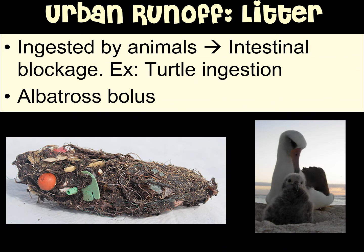Lastly we have urban runoff, which is really composed of a whole bunch of different pollutants. A good example is litter, which usually comes from urban areas and runs off with the water into larger waterways. It tends to be ingested by animals and has the tendency to break up into little pieces, making it easier for animals to ingest — we have seen this numerous times with turtles. Albatrosses have also been found to ingest a lot of plastics; they regurgitate indigestible food into boluses, and scientists found tons of plastic pieces inside these boluses — another example of water pollutants affecting the environment.